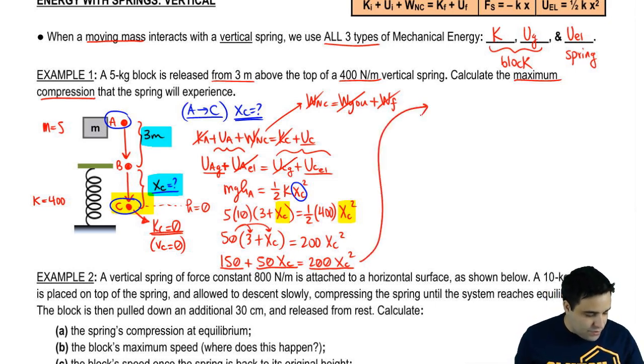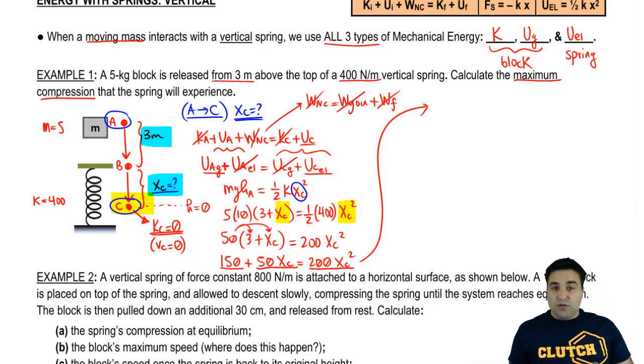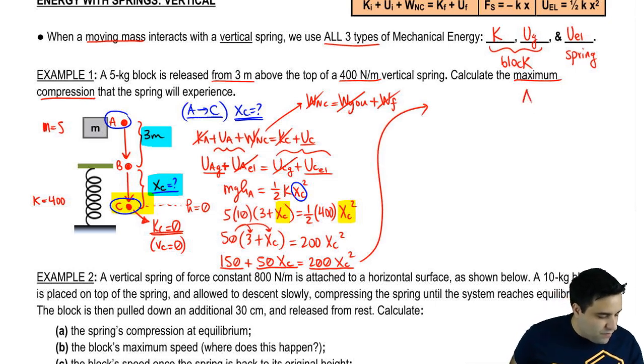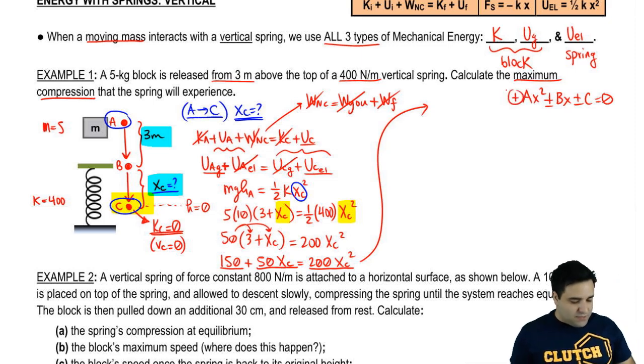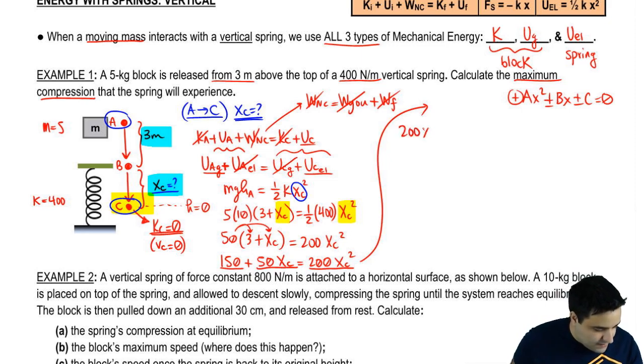So unfortunately, we're going to have to solve a quadratic equation here. I have to get this in the quadratic form. And remember, the quadratic form is ax squared plus or minus bx plus or minus c equals 0. If you need to review this, please do. And remember that a has to be positive, which means I have to move everything to the other side so that these two terms here, the 150 and the 50, are hanging out on the right side here with the x. So it's going to be 200 x squared, xc squared, minus 50 xc minus 150.